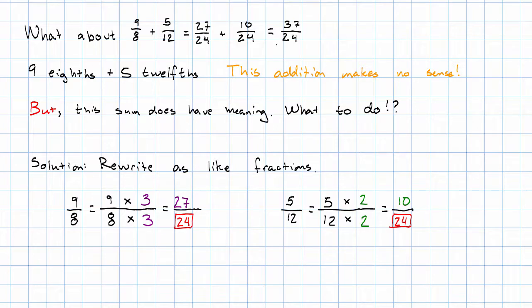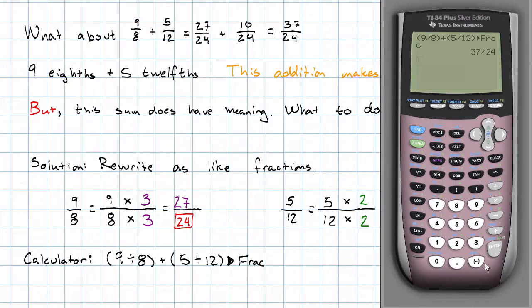I could also do that addition on the calculator. Again, making sure to put my fractions in parentheses. I take 9 divided by 8 plus 5 divided by 12 and give the result as a fraction. What does that give me? That gives me 37 twenty-fourths, just like I found by hand.